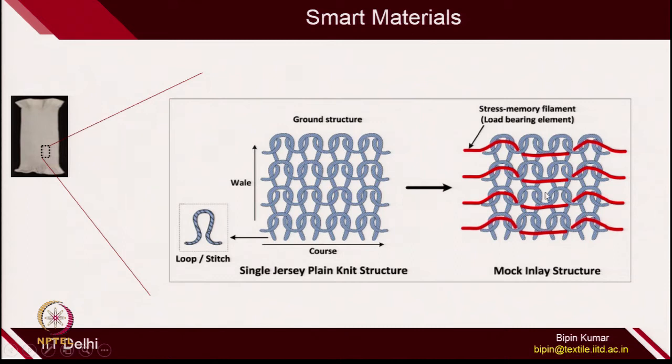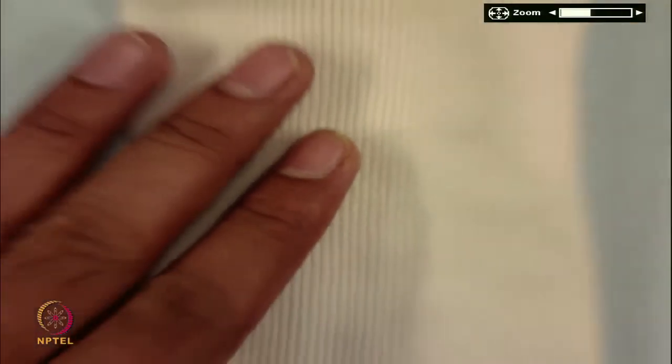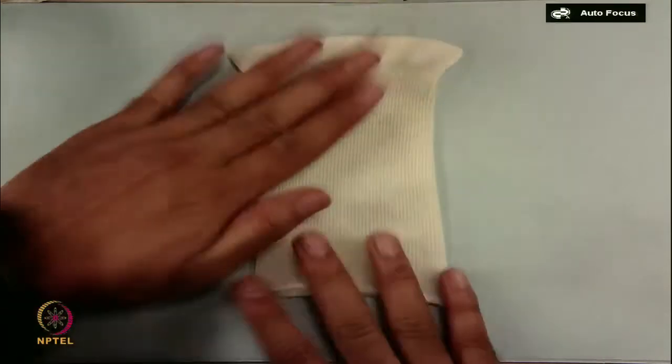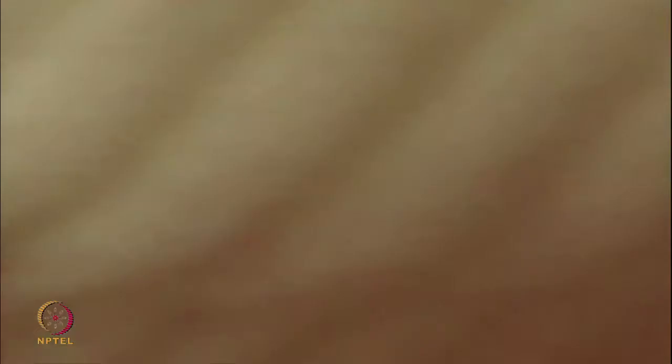I have this sample with me where I can show you — the red one, which is the smart filament or shape memory filament, integrated in the fabric structure. Let me show you this fabric. In the form of tuck and float, this is the smart stocking — a kind of smart fabric. If I zoom in, you can see the smart filament floating in the form of tuck and float in this structure.